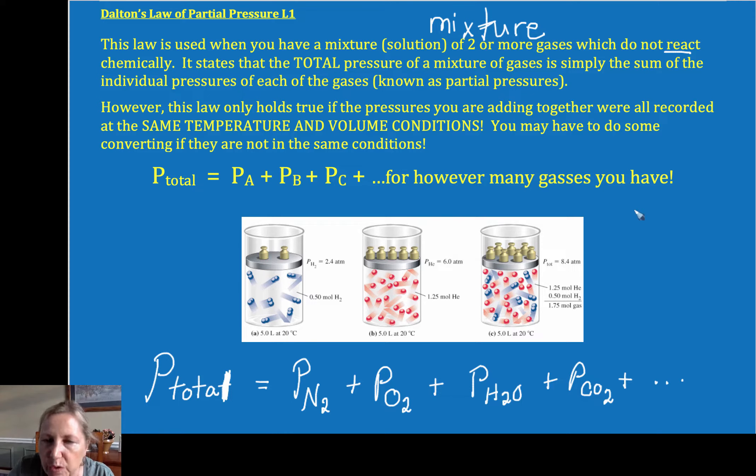Now this is going to always be true if we are dealing with a few criterion here or constraints. One, we have to have a constant volume. So if you take individual gases and then mix them into a container that's a different size, you have to do a combined gas law calculation. Same thing with temperature. So once we mix the gases, the temperature has to be the same and constant.